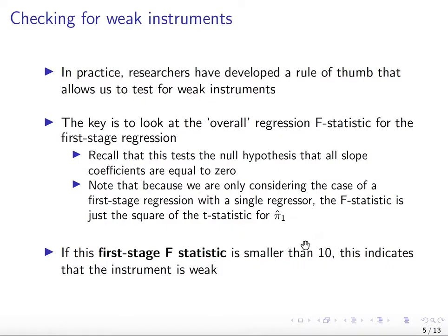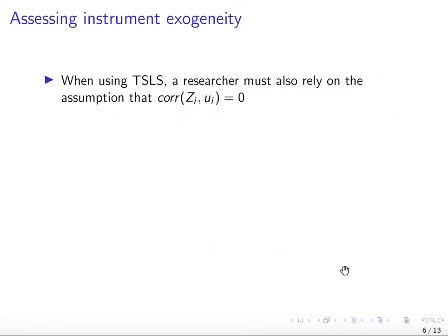If your F-statistic is larger than 10, then you do not have a weak instrument. To know whether the instrument z is strongly correlated with x, you look at the F-statistic in the first stage. Then there's the other requirement, which is exogeneity or the exclusion restriction.